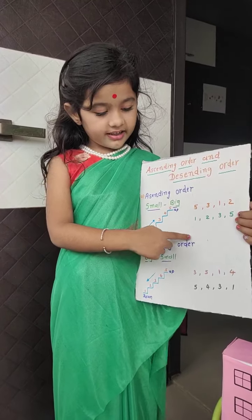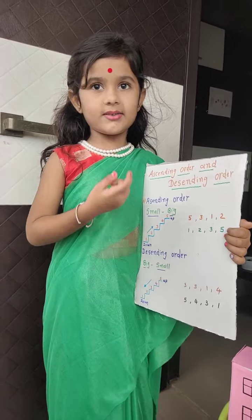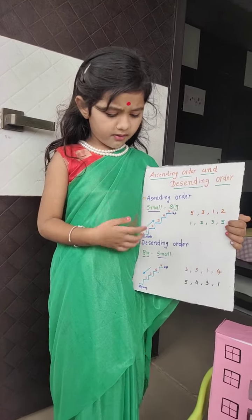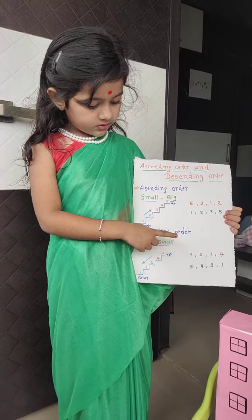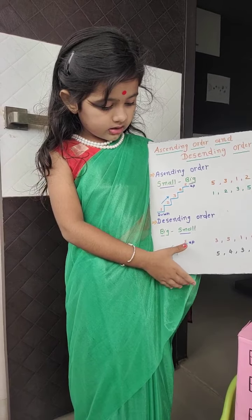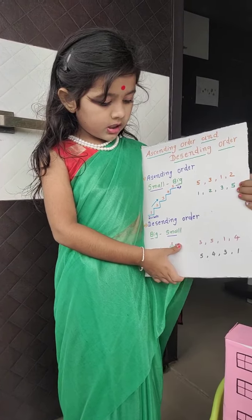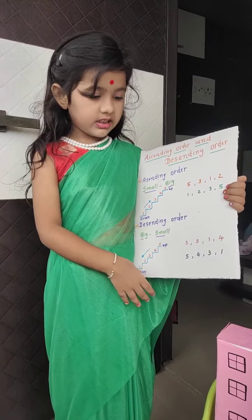And descending orders — descending orders means you have to go from big number to small number, like an up chain to down chain.